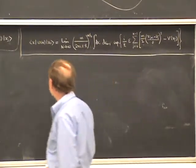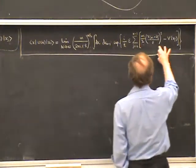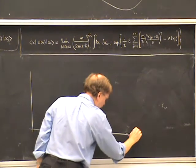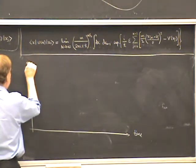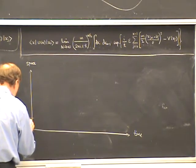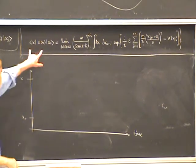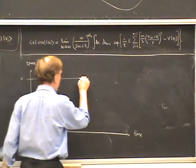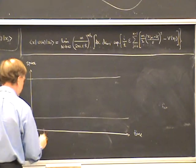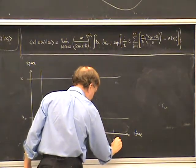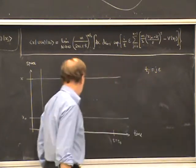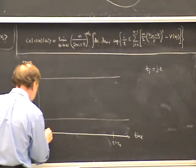The next thing to do is to visualize what's going on with this X-integral. Let me make a spacetime diagram with time going to the right and space going vertically — just one dimension. We have two fixed positions: X₀ at the initial time T equals 0, and X at the final time T. There are also intermediate times T₁, T₂, T₃, and so on — just multiples of epsilon — drawn as dotted vertical lines parallel to the X-axis.